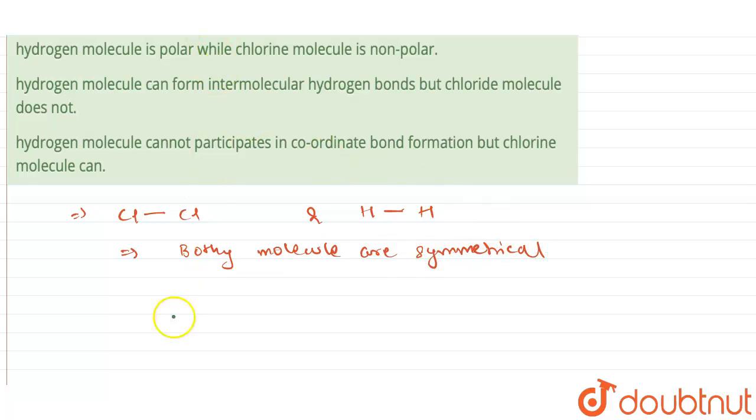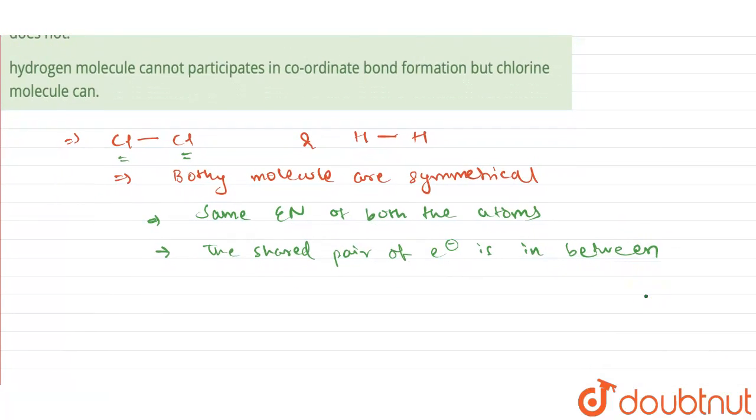Then it is also seen that there is same electronegativity of both the atoms—chlorine has same electronegativity as chlorine, hydrogen as hydrogen. Both atoms which are attached together with the bond are same. Next it is seen that the shared pair of electrons